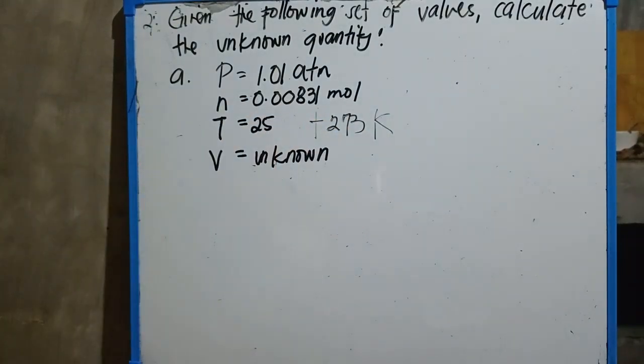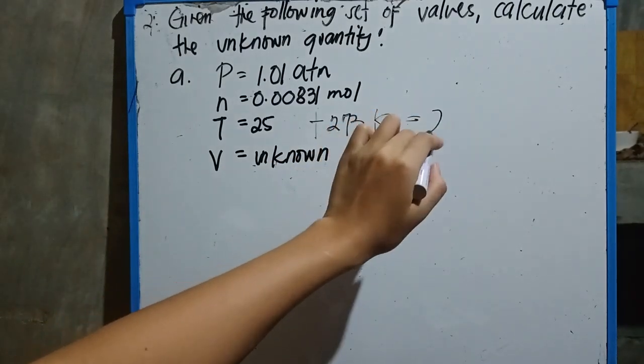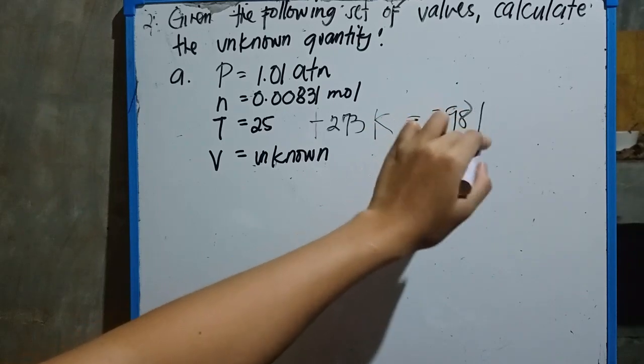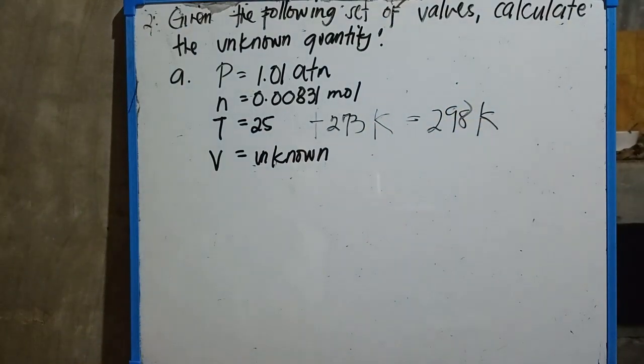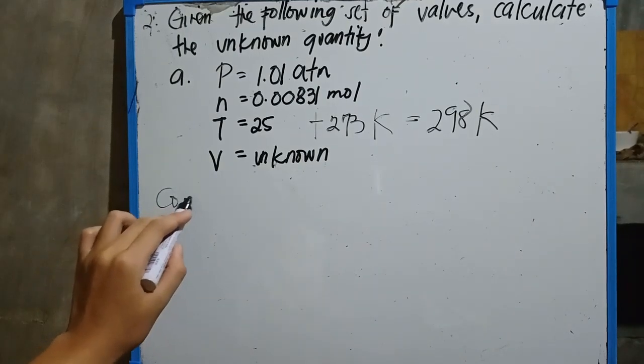So plus 273. 25 plus 273 is equivalent to 298 kelvin.